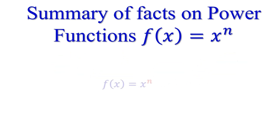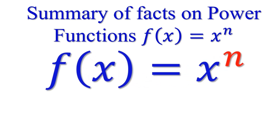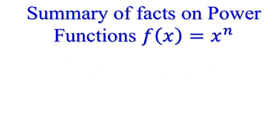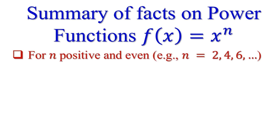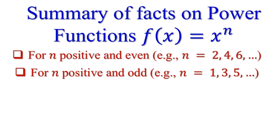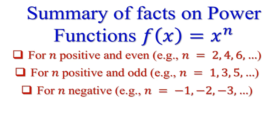For power functions, there are three things involved because it has to do with the power of n. For this power of n, either n is positive and even, or perhaps it is positive and odd, or the last case is if the n power is negative.